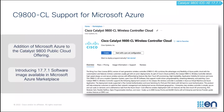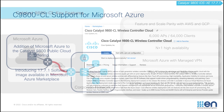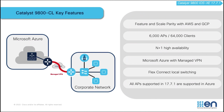With the Cisco Catalyst 1900 CL that has already been offered on AWS and GCP, Cisco has recently released the Catalyst 1900 CL on Microsoft Azure Marketplace. The features and scales are similar with AWS and GCP, which supports a maximum of 6,000 APs and 64,000 clients on a single instance through the Microsoft Azure Management VPN connection.